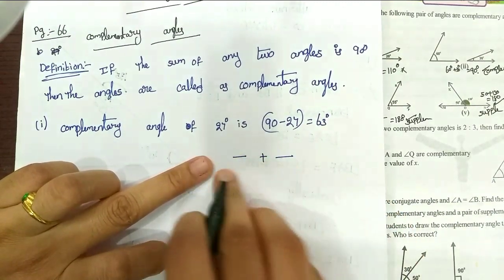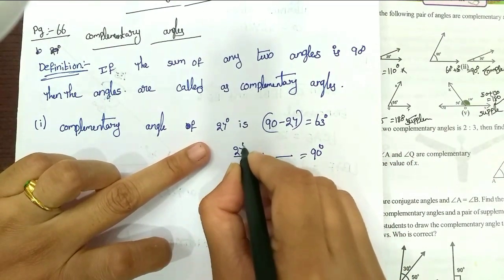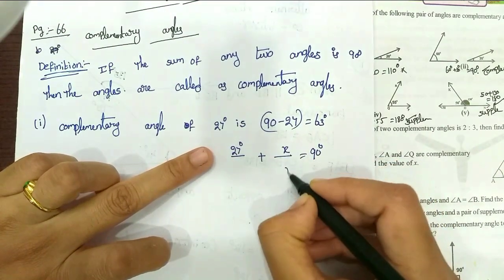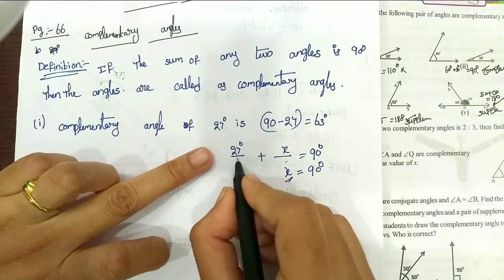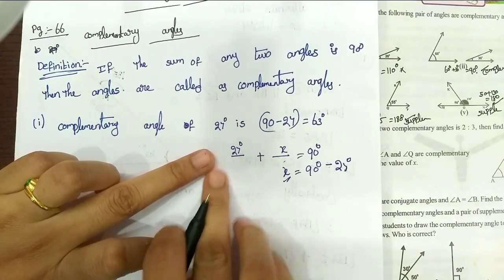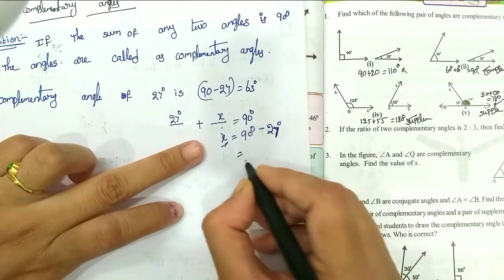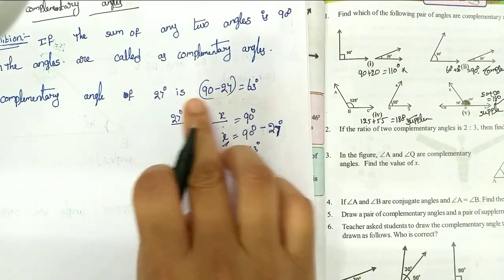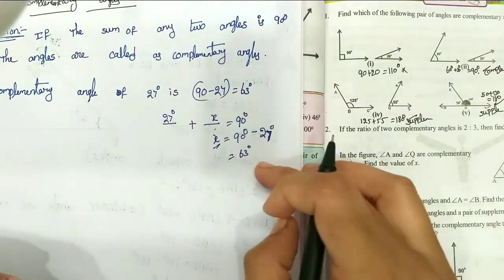Here is the complementary angle: if you add two angles, they equal 90 degrees. The angle is already 27 degrees. We will find the unknown angle X. Since the angles are complementary, we transpose 27 to the other side — it becomes subtraction. So 90 minus 27 equals 63. If you add 63 and 27, the sum is 90.